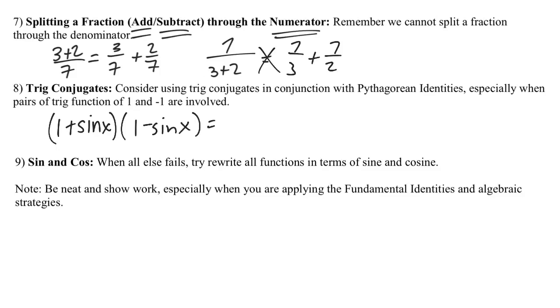When I multiply those, those are now a difference of squares. So this is going to be one minus sine squared of x, which using a Pythagorean identity, which a lot of the times will show up whenever you work with trig conjugates, you're going to get cosine squared of x. This is one way that a trig conjugate could be used if you have a one plus sine x or a one minus sine x or a one plus cosine x or something to that effect.